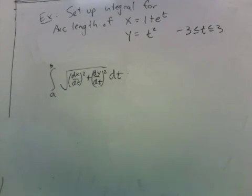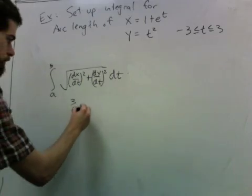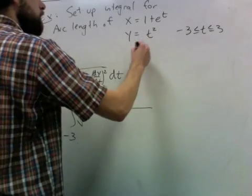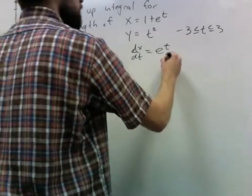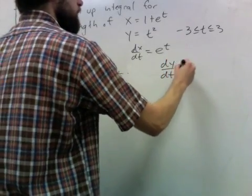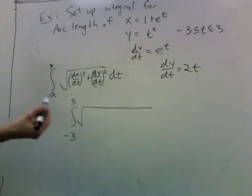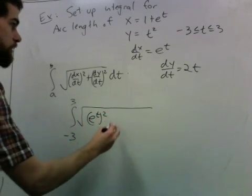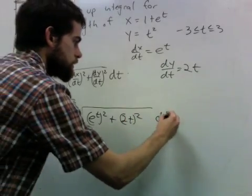and t goes from negative 3 to 3. So just using this formula, well, dx/dt is e to the t, and dy/dt is 2t. So we just have e to the t squared plus 2t squared dt.